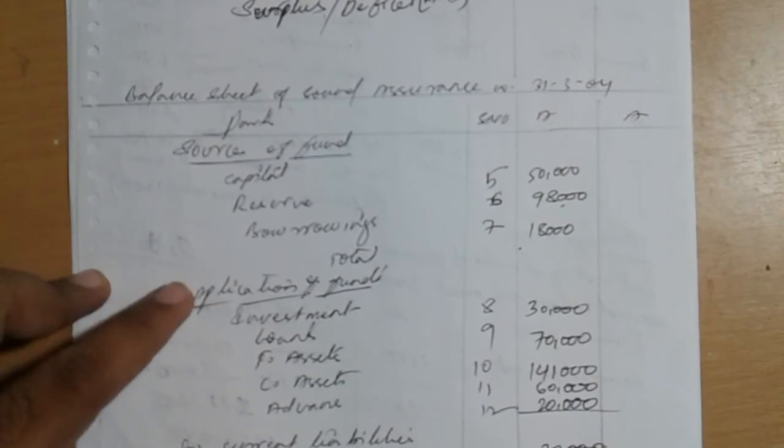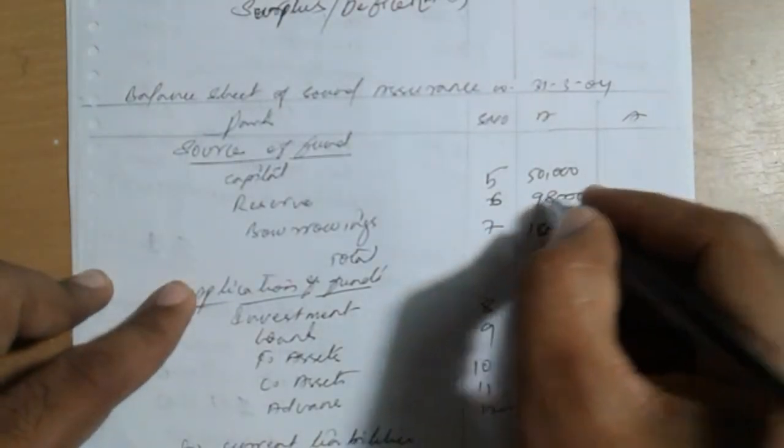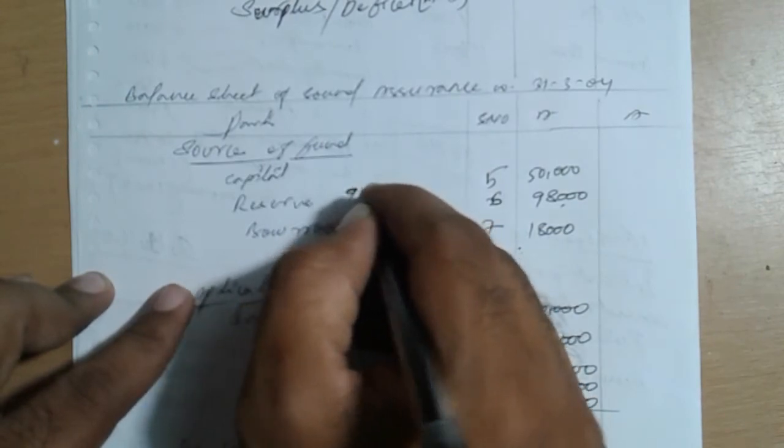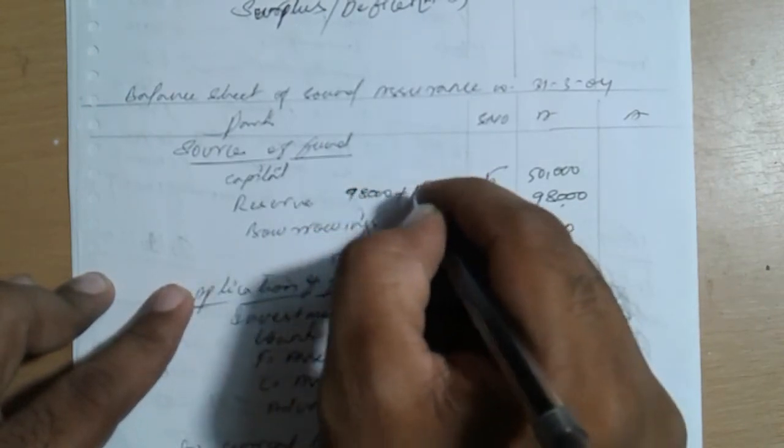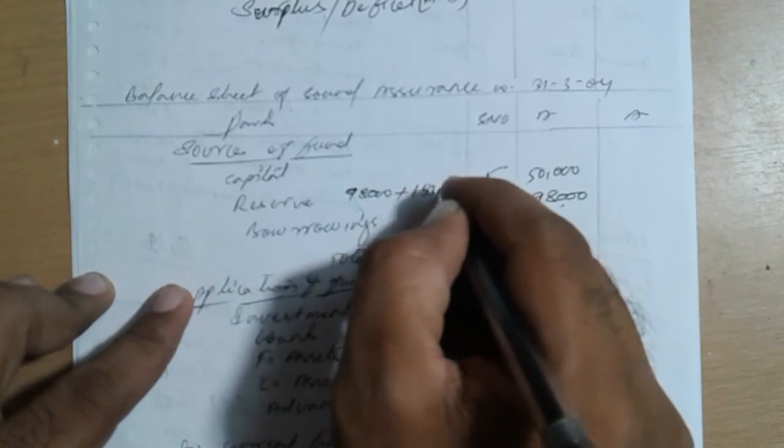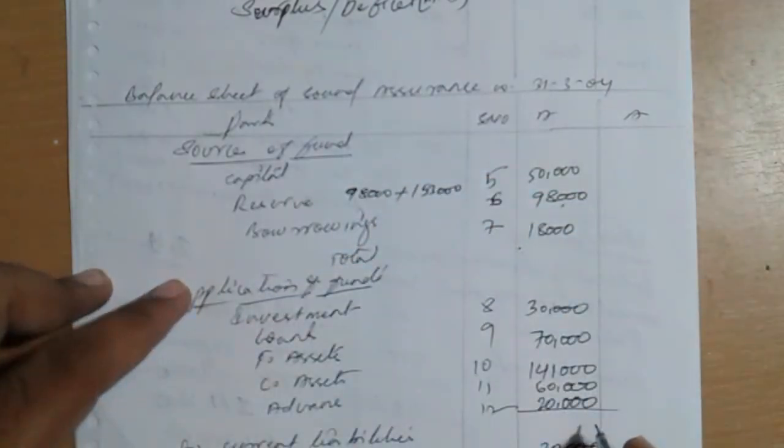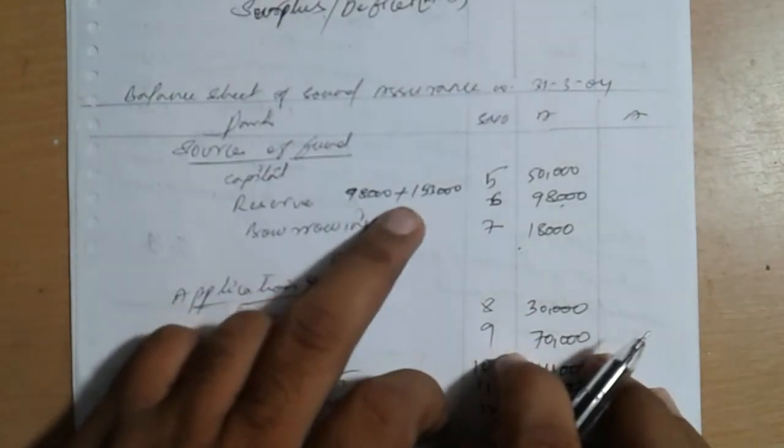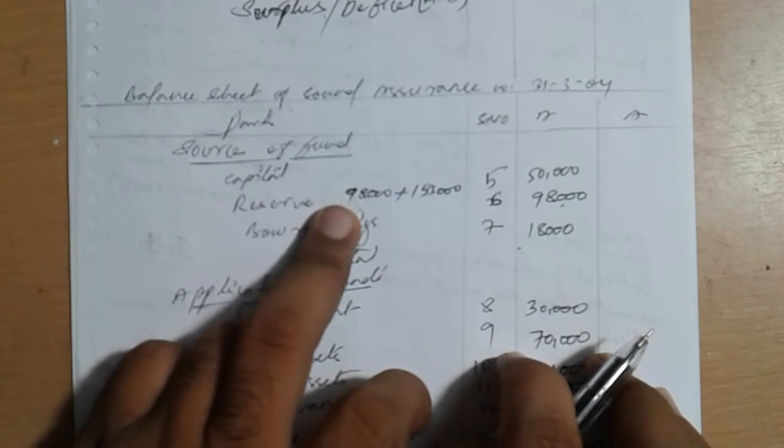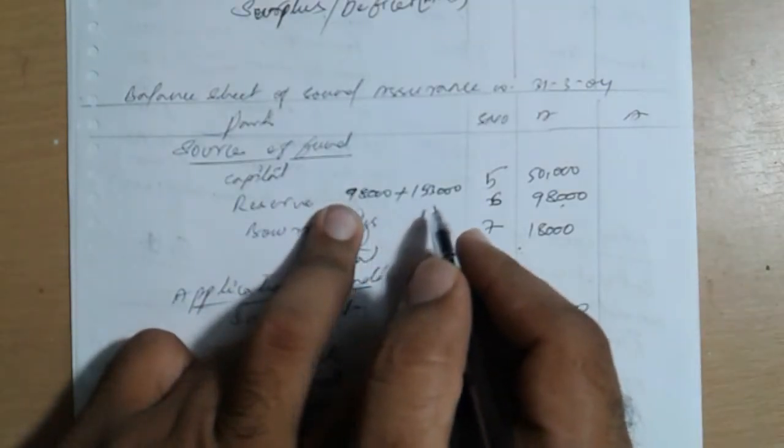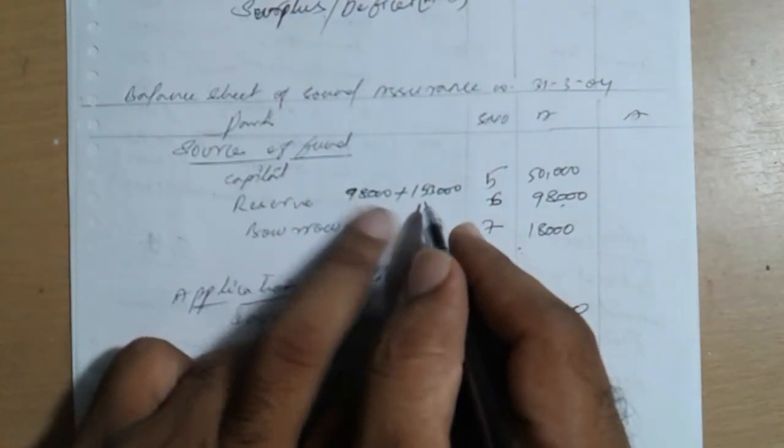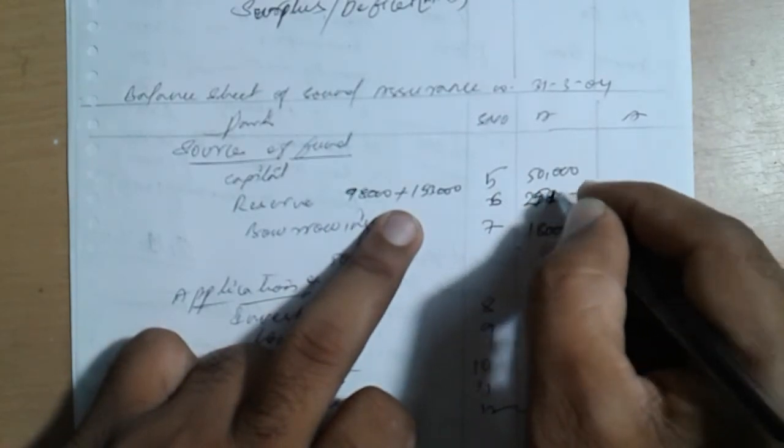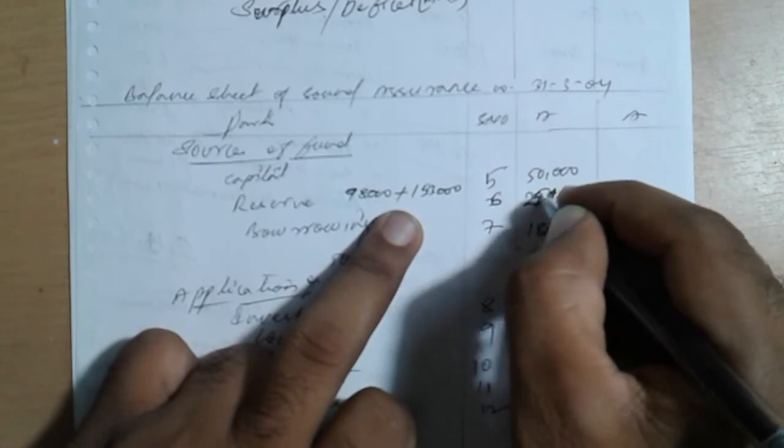98,000 plus 1,53,000. Overall total: 98 plus, add two here: 1,00,000, 2,00,000, 2,51,000. Overall: 2,51,000.